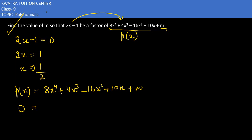Substitute: 8 times (1/2) to the power 4, then 4 times (1/2) to the power 3, minus 16 times (1/2) squared, then 10 times (1/2), plus m. The 2 and 10 cancel, so m remains.